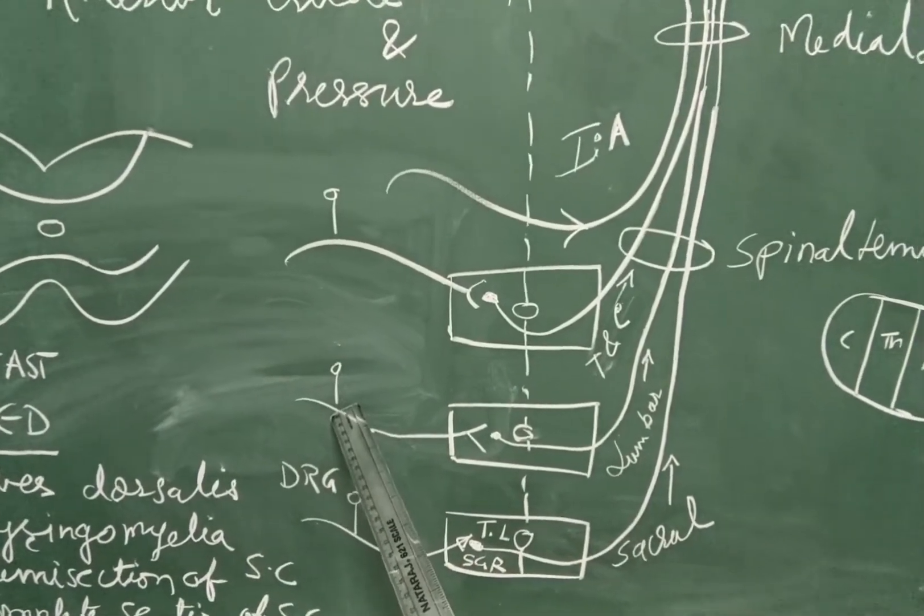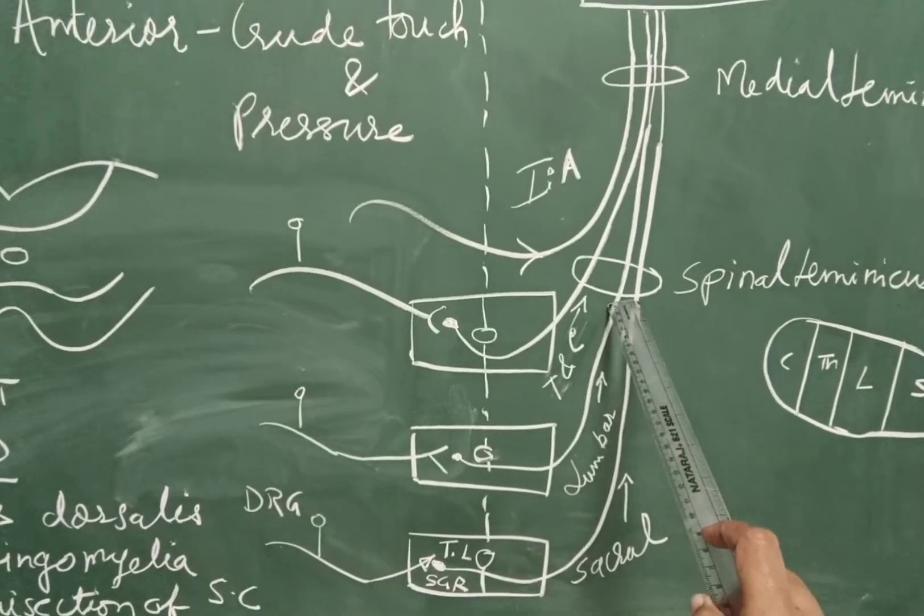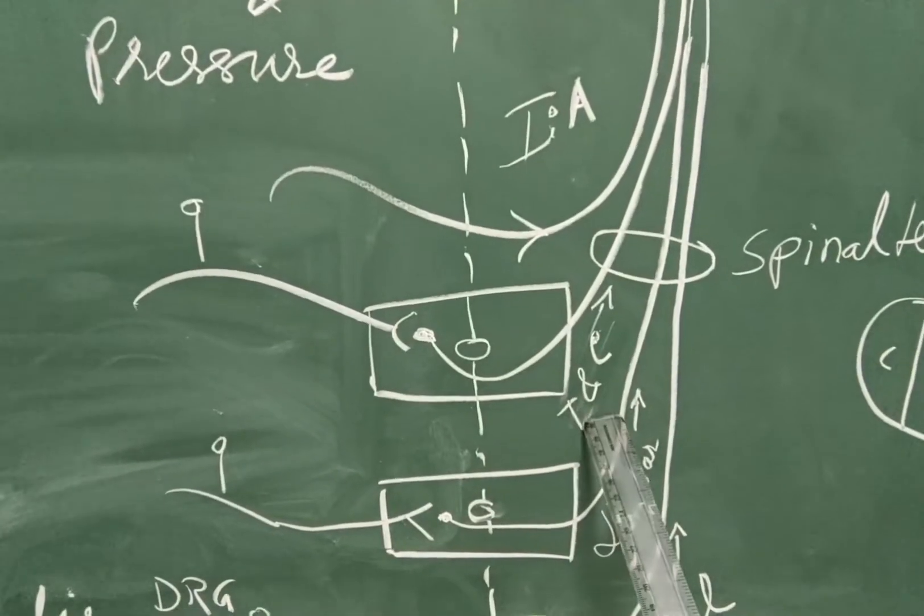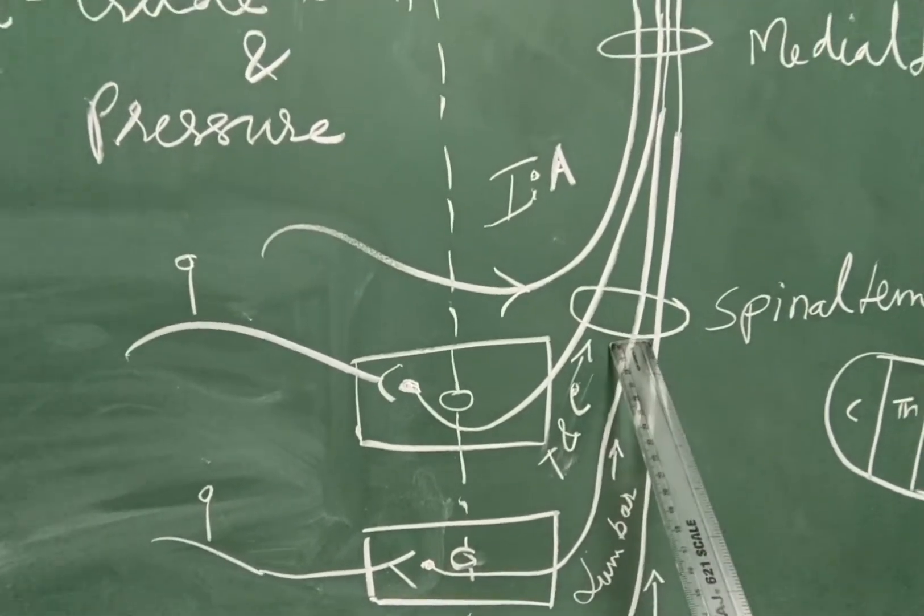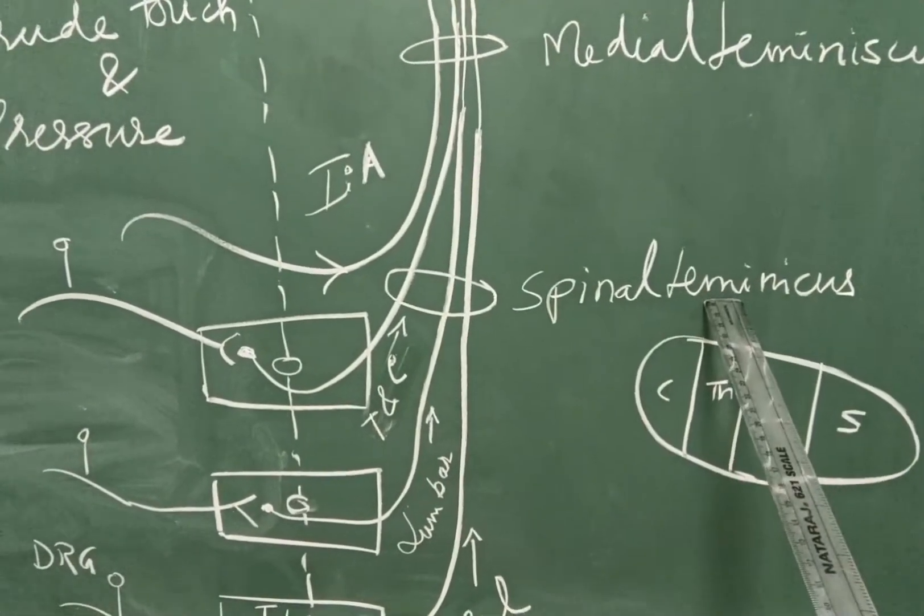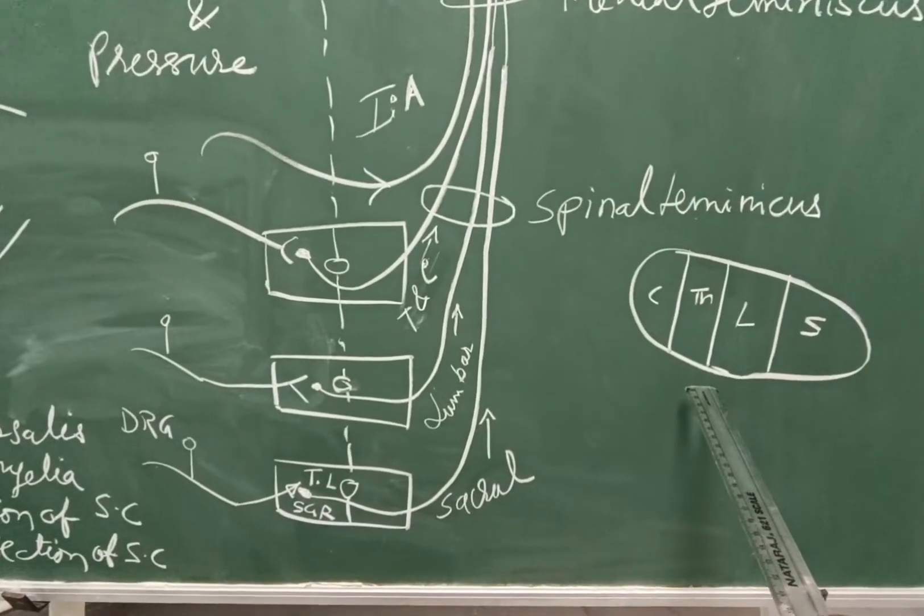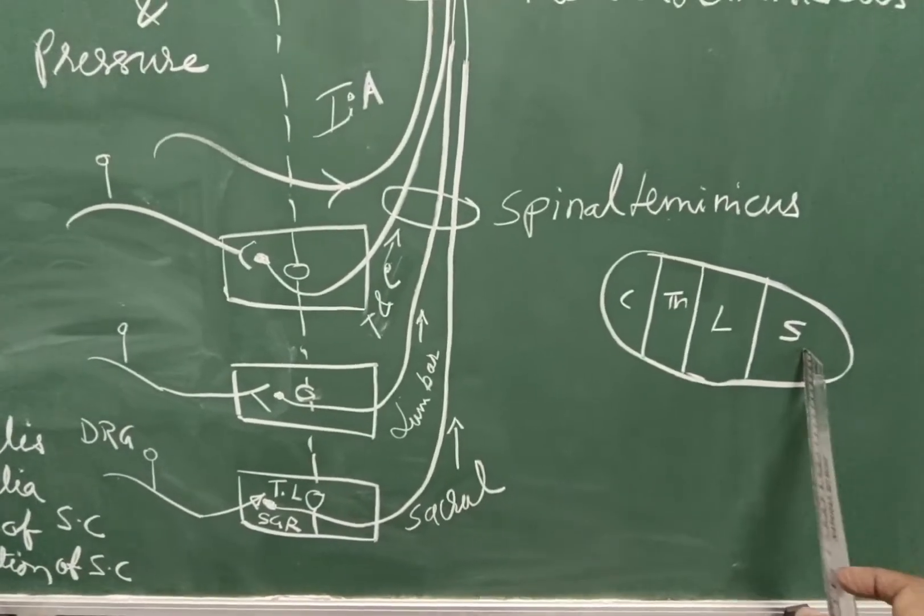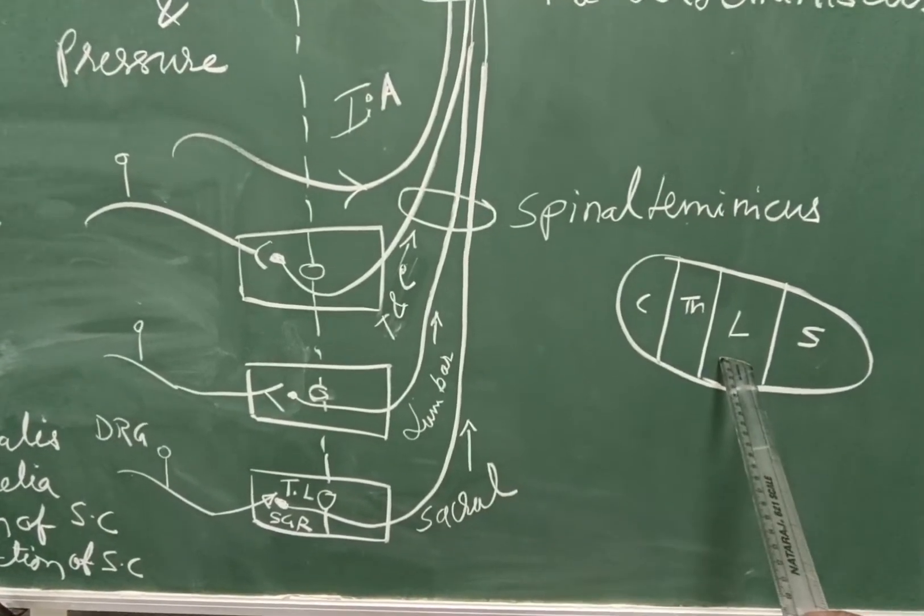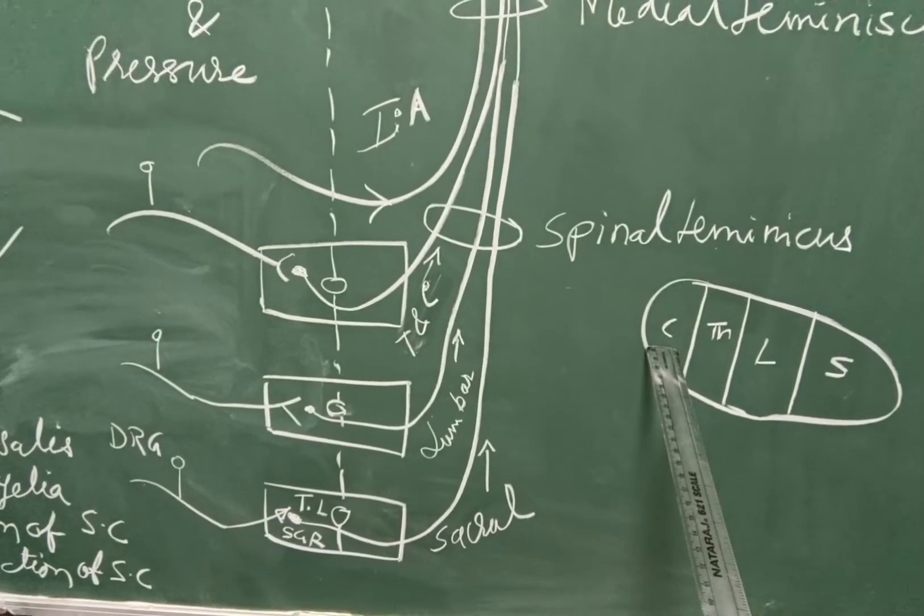Similarly, little bit upward, lumbar fibres also join in similar way. They cross immediately to the opposite side. And above, you can see these are the thoracic and the cervical fibres. Together, they form the spinal lemniscus as shown here. Now let's see the arrangement of the fibres. If you see the lemniscus, the outermost fibres are the sacral ones. Inner to this are the lumbar fibres, then thoracic and finally the cervical.